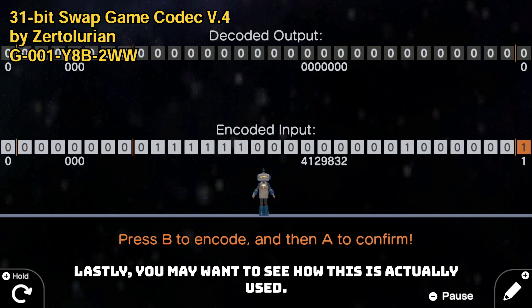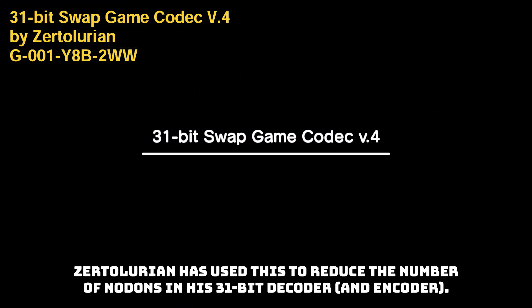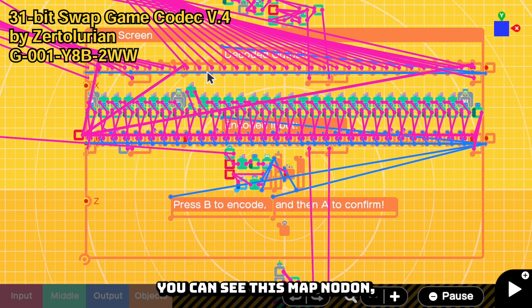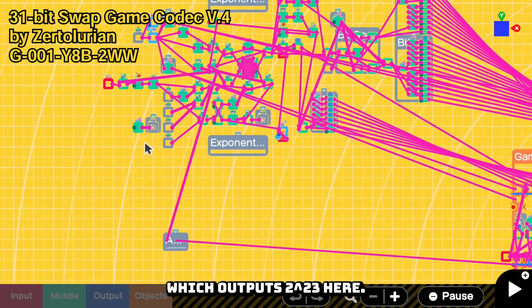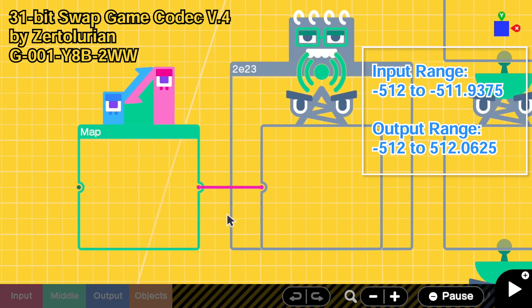Lastly, you may want to see how this is actually used. Zertolurian has used this to reduce the number of nodons in his 31-bit decoder. You can see this map nodon which output 2 power 223 here. Map nodon is indeed OP.